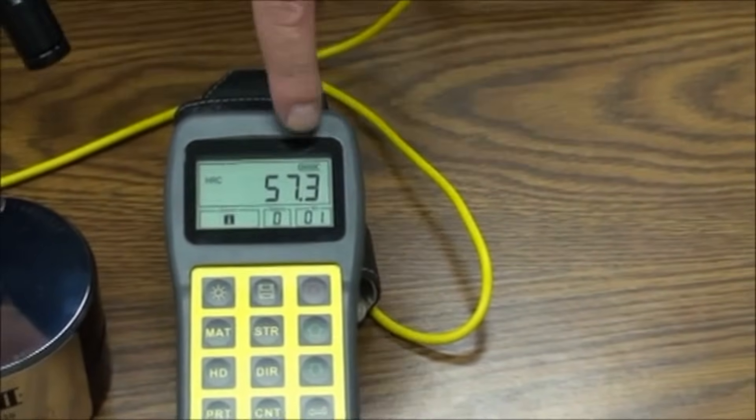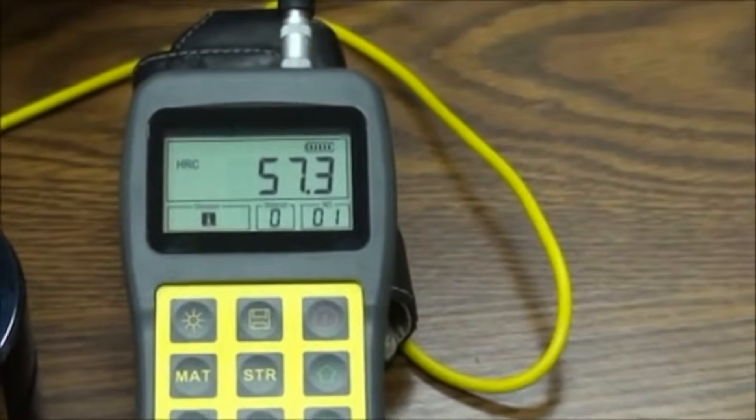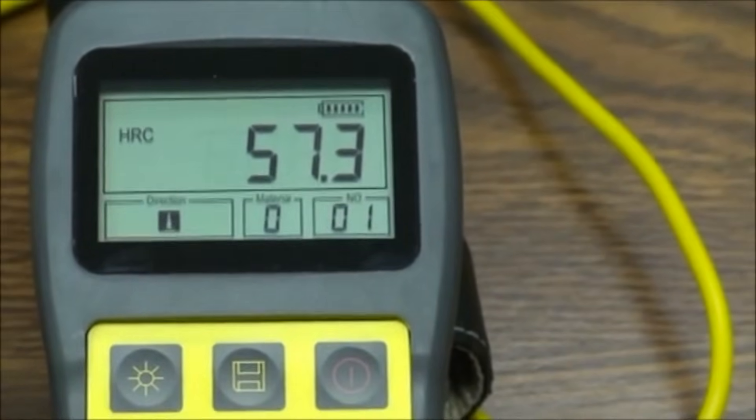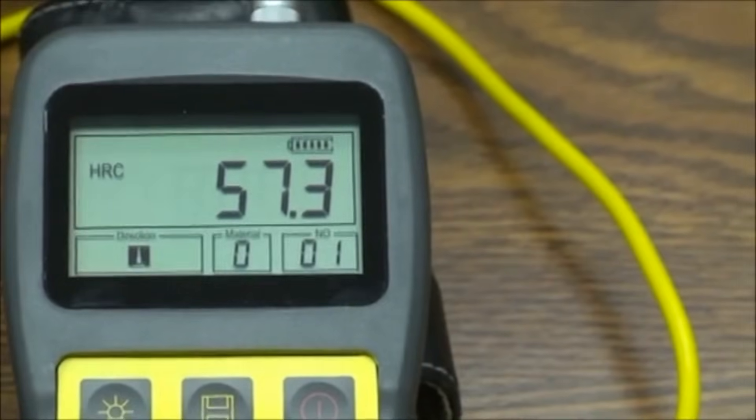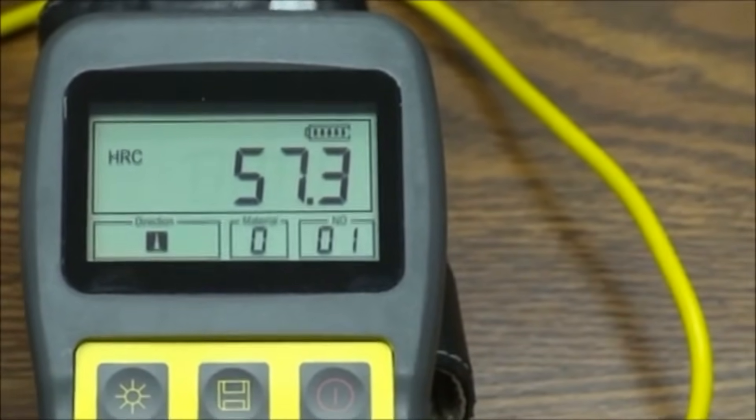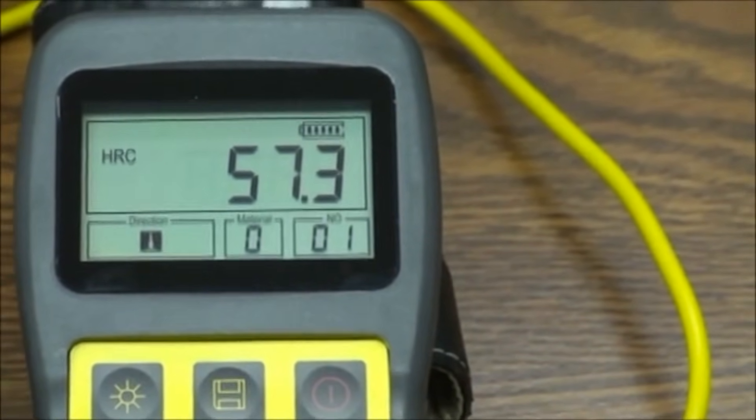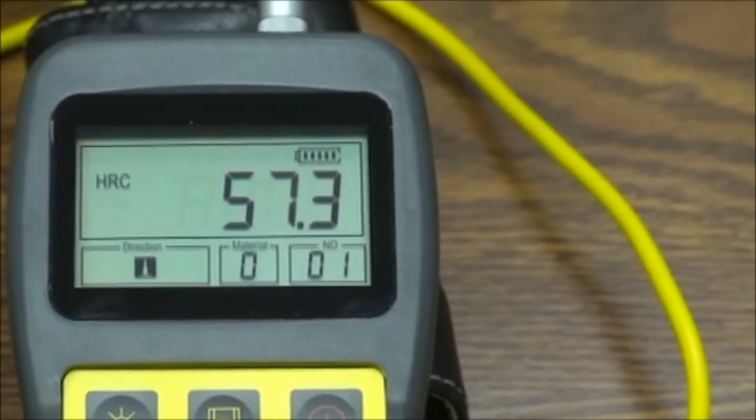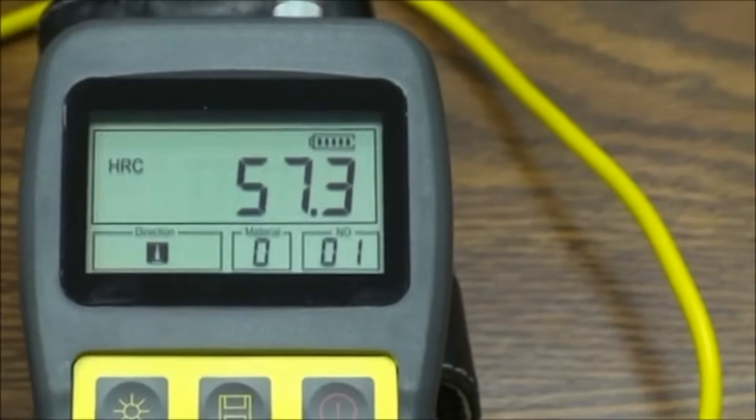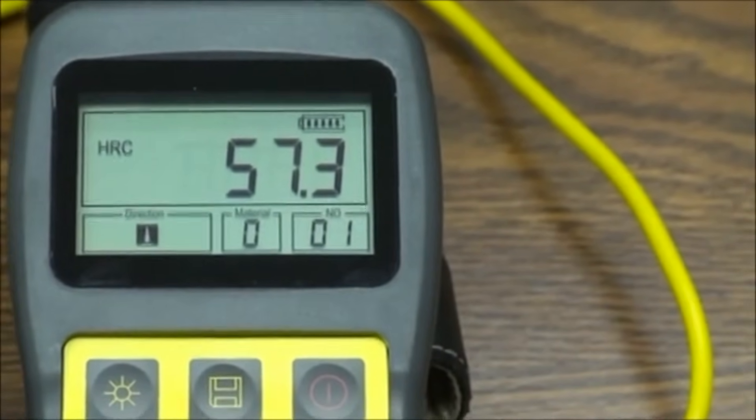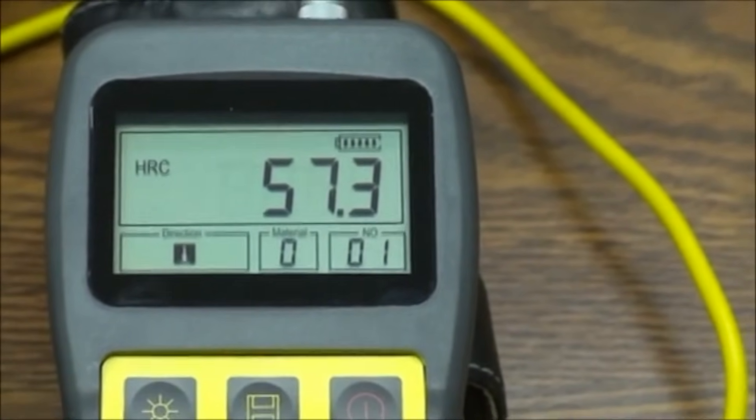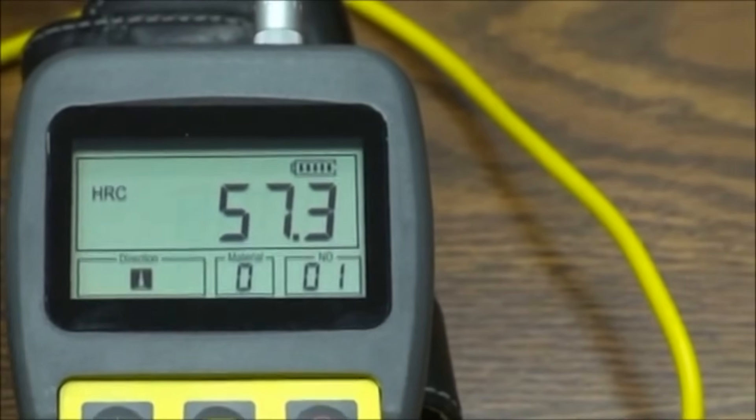You will also notice that the screen is showing your battery life, direction of probe during test, the material selected, the scale you are reading in, and the number of tests you have taken. The number will revert back to zero once you have reached the number of tests to take an average.